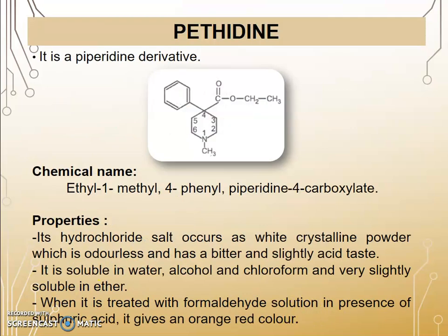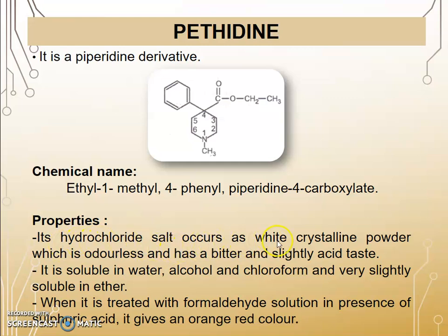The second drug is Pethidine. It is a derivative of piperidine. It contains a methyl group at position 1, a phenyl group at position 4, and at position 4 it also has a carboxylate with an ethyl group substitution. Therefore, its chemical name is ethyl-1-methyl-4-phenyl-piperidine-4-carboxylate. Its hydrochloride salt occurs as a white crystalline powder which is odorless with a slightly acidic, bitter taste. It is soluble in water, alcohol, and chloroform, and very slightly soluble in ether. When treated with formaldehyde solution in the presence of sulfuric acid, it gives an orange-red color, which is used for identification of Pethidine.